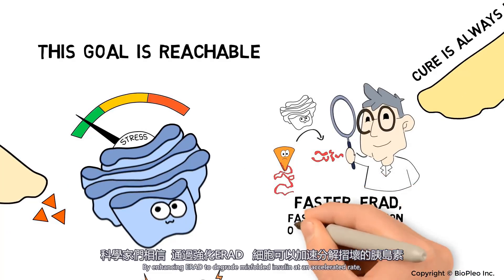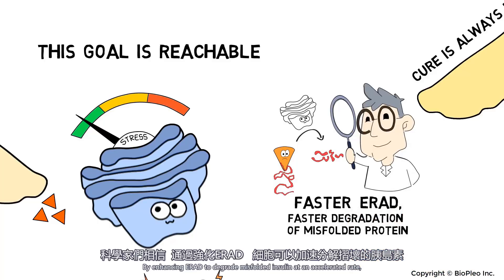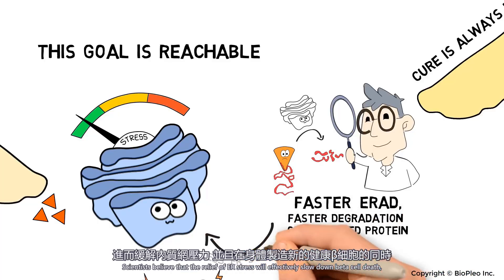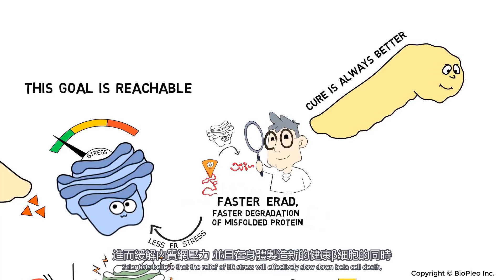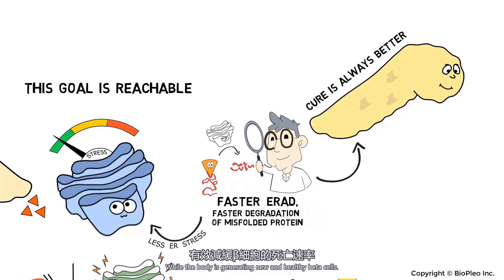By enhancing ERAD to degrade misfolded insulin at an accelerated rate, scientists believe that the relief of ER stress will effectively slow down beta cell death while the body is generating new and healthy beta cells.